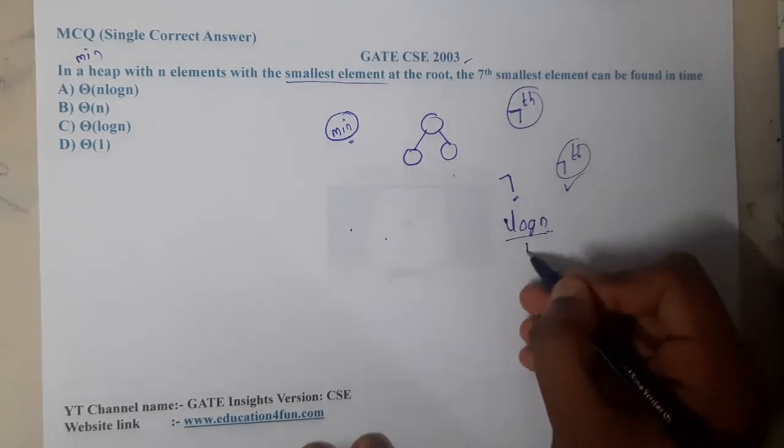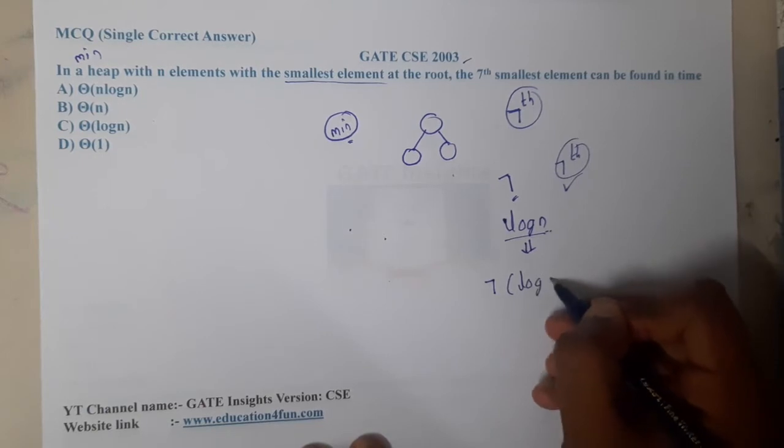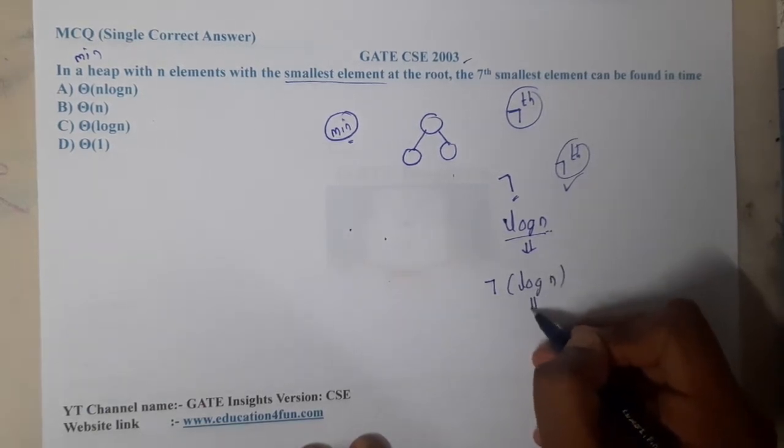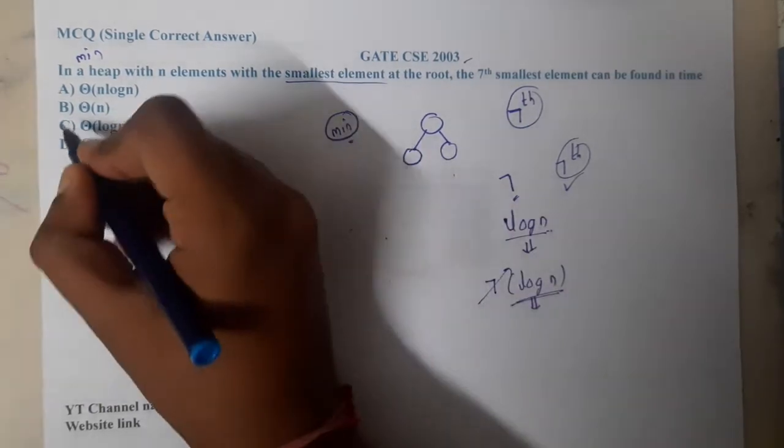In asymptotic notation, the seven is always a constant, so at the end you can conclude it's log n time. So C will be the correct answer. It's a quite simple question, but